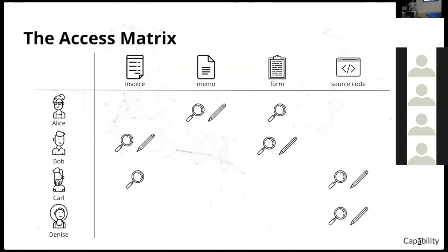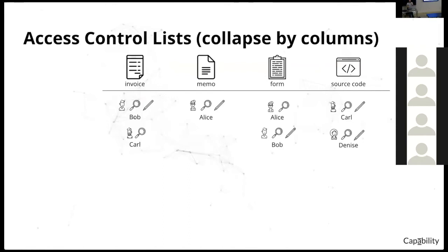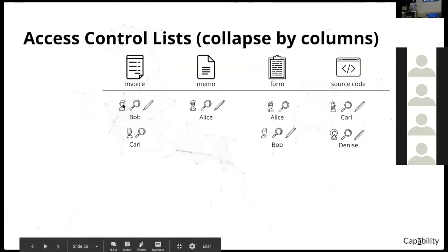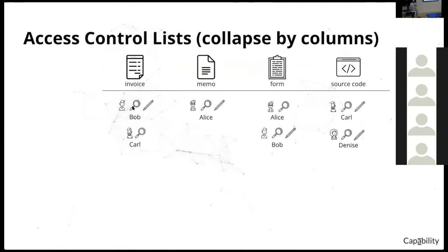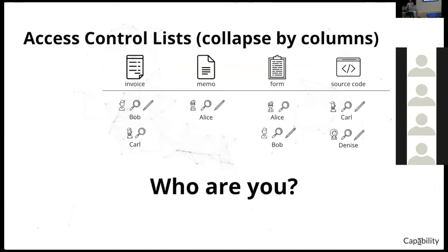You'll notice there are a lot of empty columns in this access matrix. Instead of storing the entire matrix with null values, we collapse it to remove empty spaces. When we collapse by columns, we get the familiar concept of access control lists — we distribute the information about who into every possible column and couple it with permissions. For example, Bob can read and write the invoice, Alice can read and write the memo. This is where the 'who are you' question actually comes from — in order to determine access decisions, we need to know who does what to what resource.